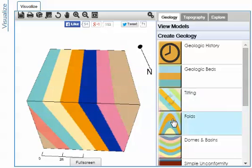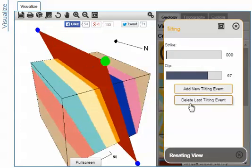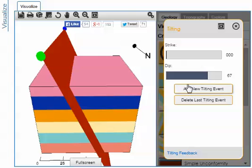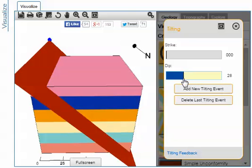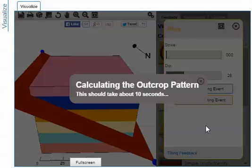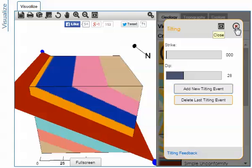You can adjust later by picking the Tilt button again, deleting the last Tilt event, change your parameters, add this as a new event, and the model is calculated.